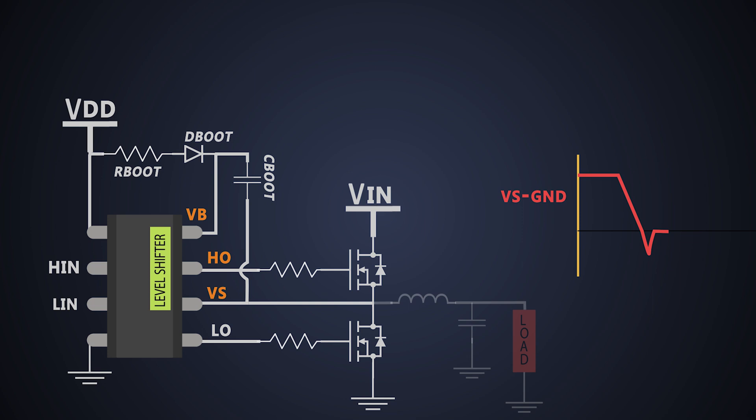The other problem caused by the negative voltage transient is the possibility to develop an overvoltage condition across the bootstrap capacitor.